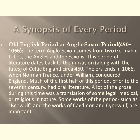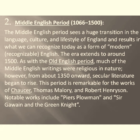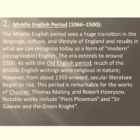The Middle English period sees a huge transition in the language, culture, and lifestyle of England, resulting in what we can recognize today as a form of recognizable English. This era extends to around 1500. Much of the Middle English writing was religious in nature, but from about 1350 onwards, secular literature began to rise. This period is remarkable for the works of Geoffrey Chaucer, Thomas Malory, and Robert Henryson. Notable works include Piers Plowman and Sir Gawain and the Green Knight.